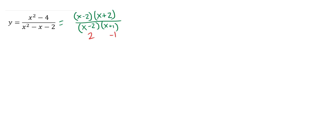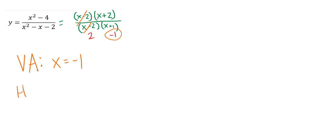Vertical asymptotes come from after canceling whatever is left over. If I cancel out the x minus 2's, the only excluded value left over is negative 1. So in this one my vertical asymptote is x equals negative 1. Holes come from the things that did cancel — in this case, 2.